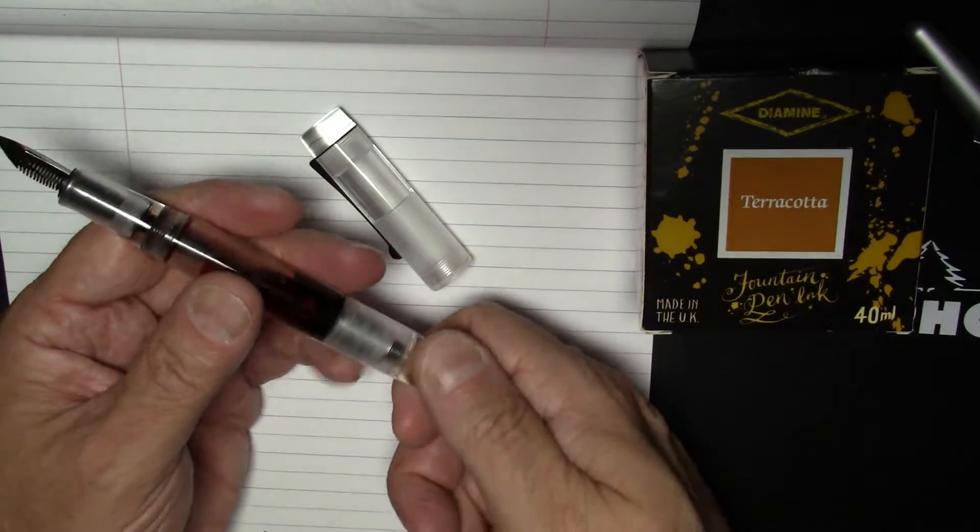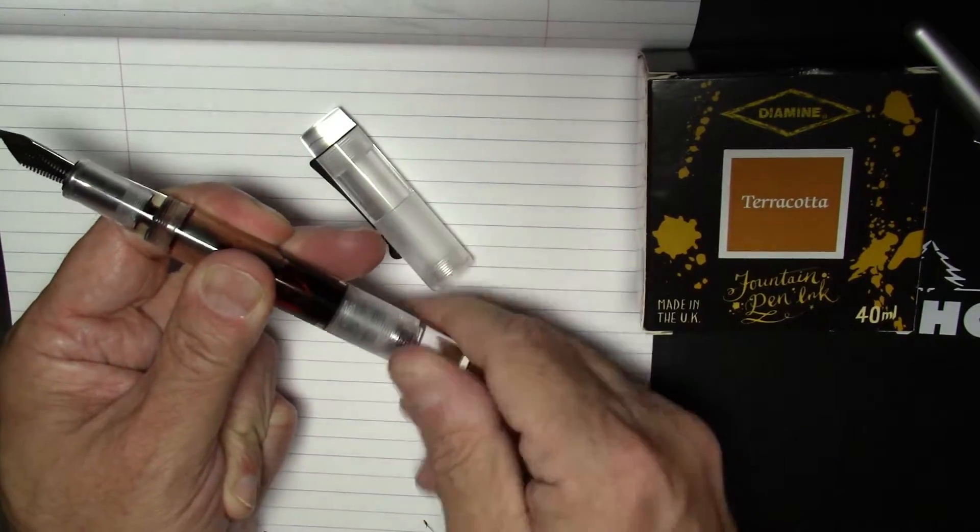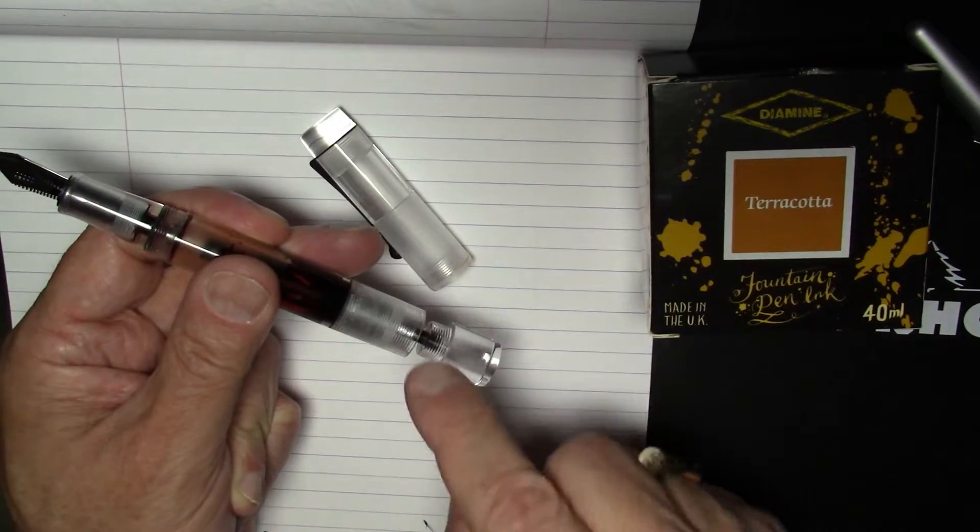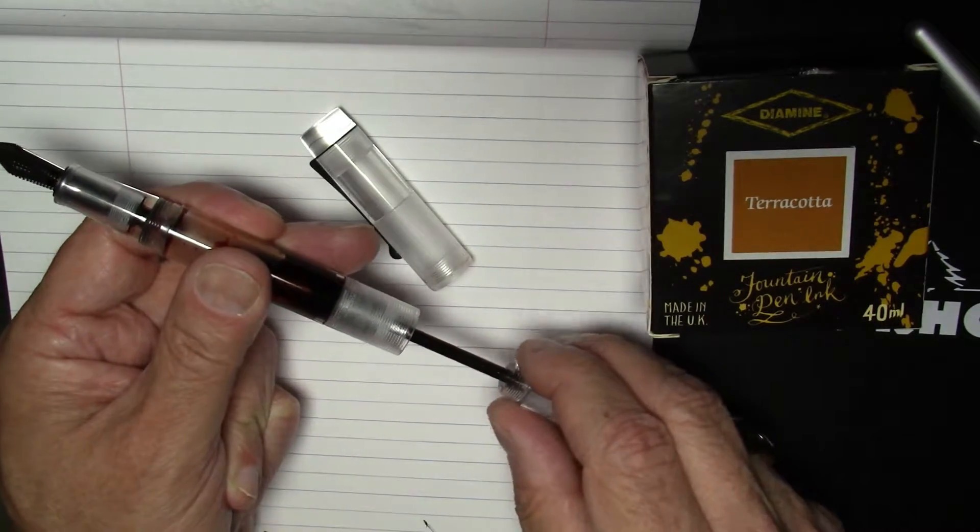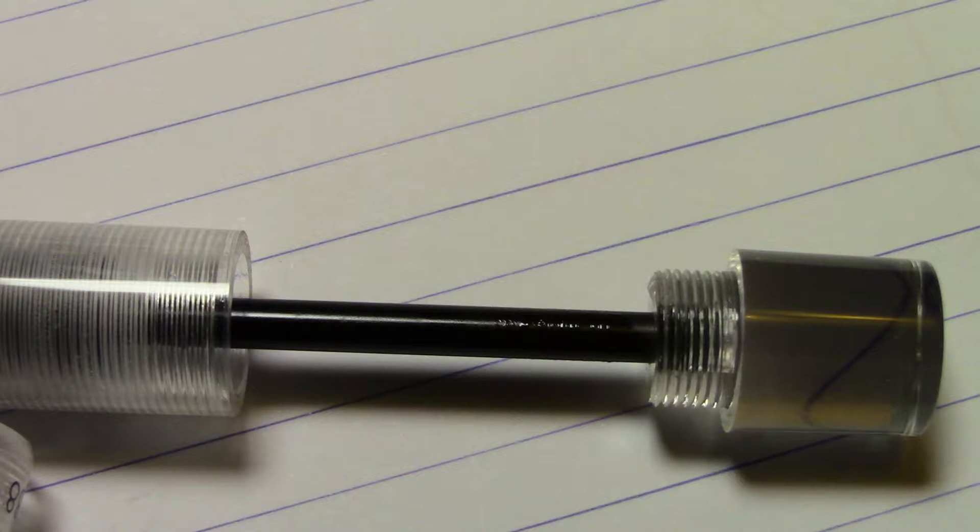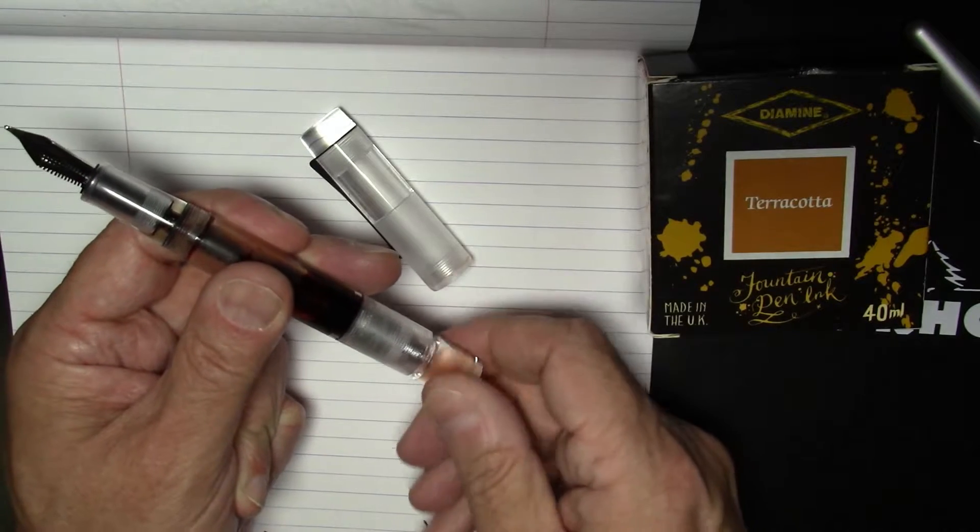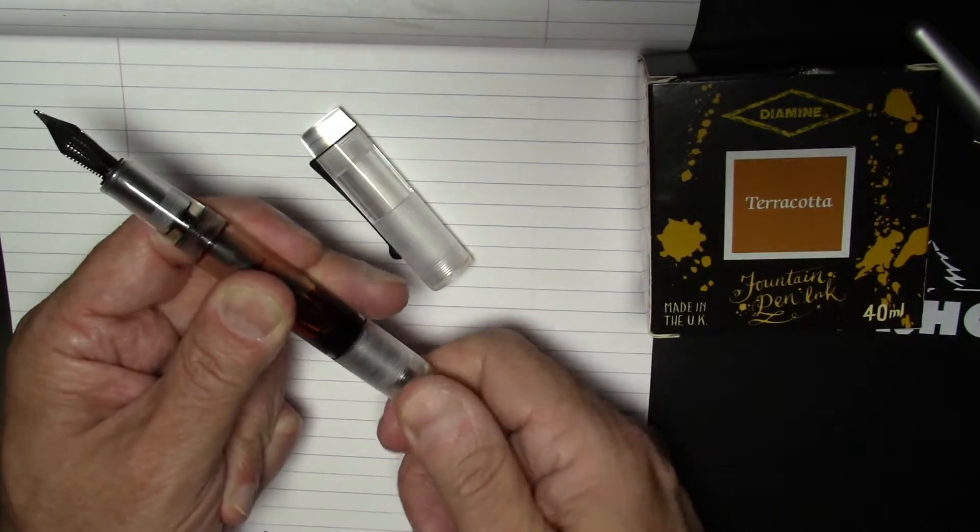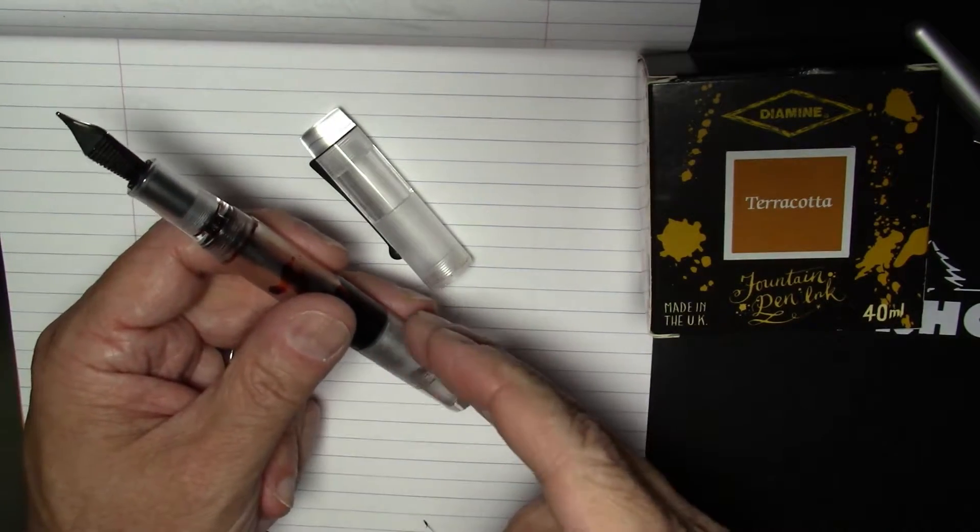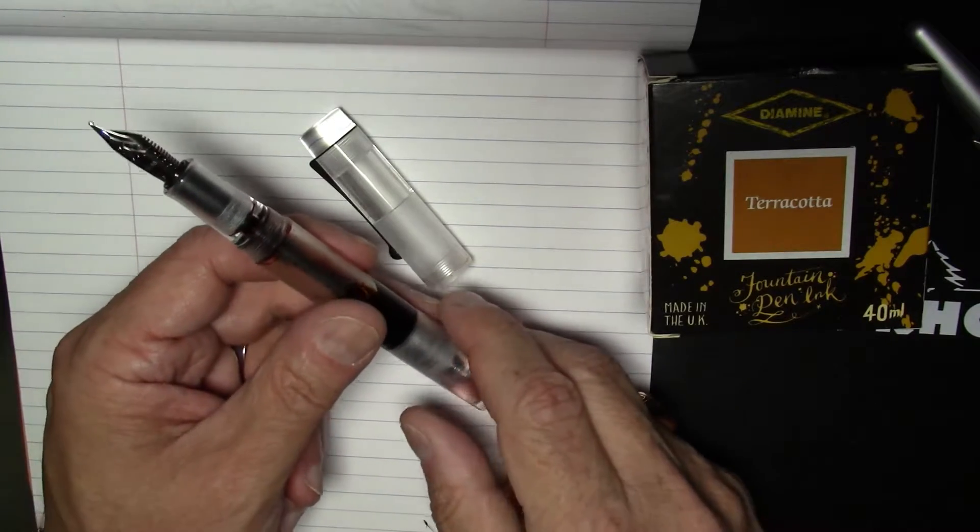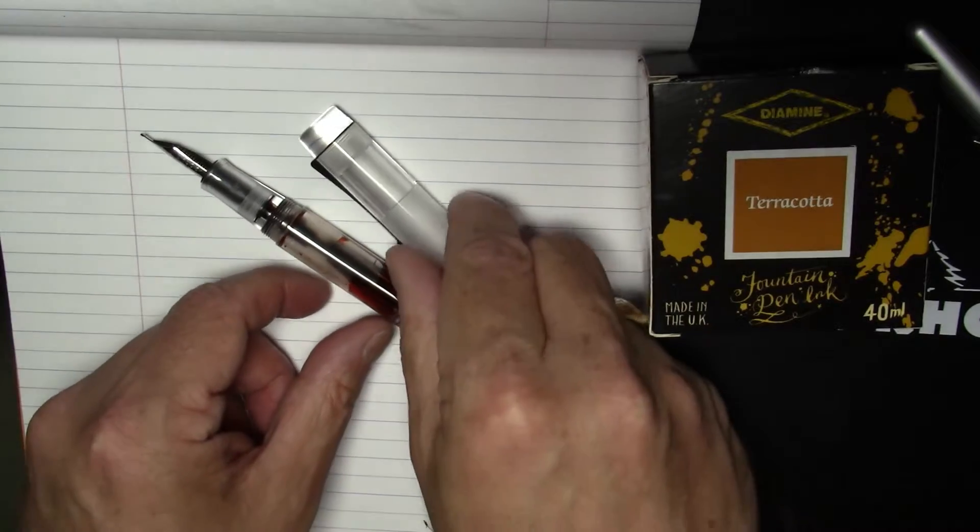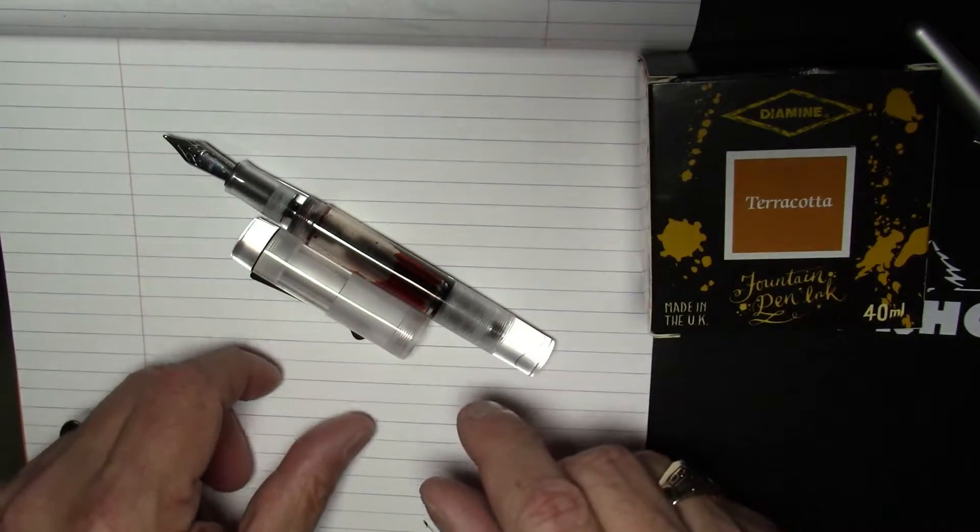One thing, the threads here on this end of this mechanism, when I first got the pen, were very stiff, as well as this rod moving back and forth was also quite stiff. It did need to be lubricated with silicone grease. It would have been nice if they either lubricated it or, even better, provided some silicone grease as part of the pen package.